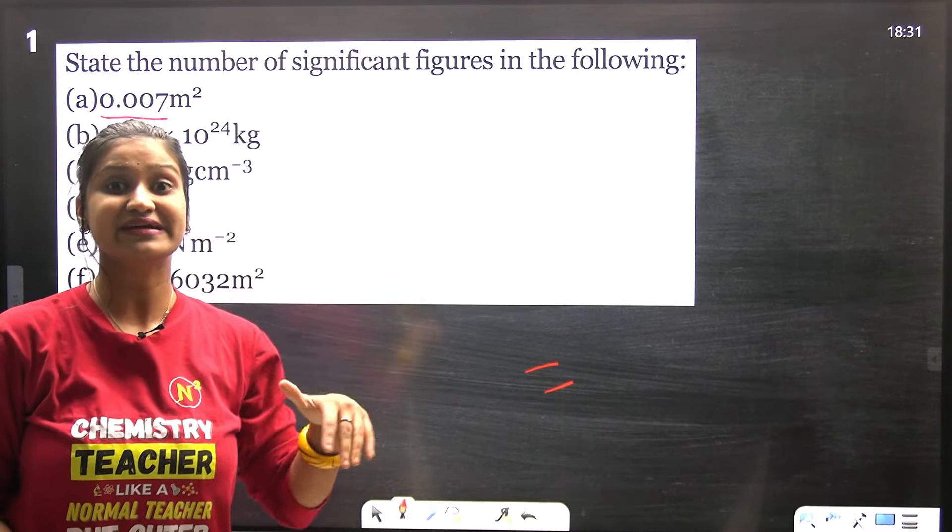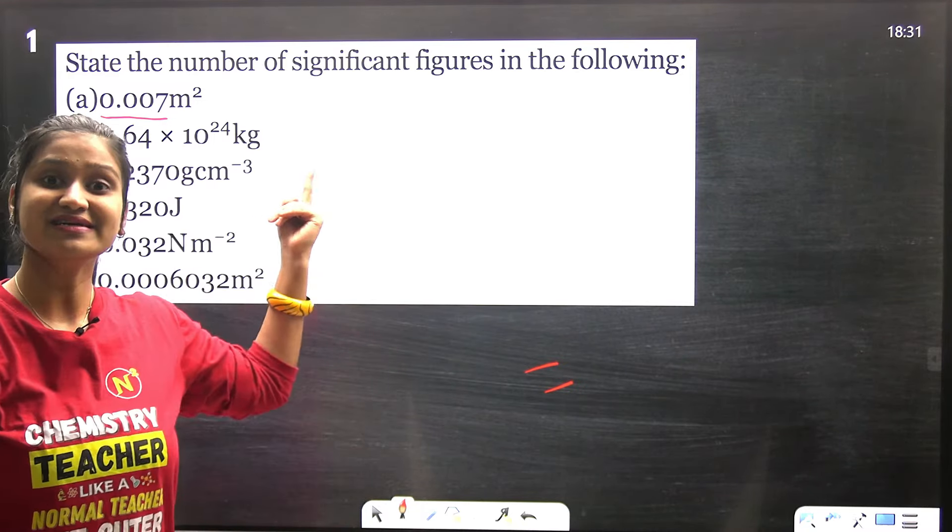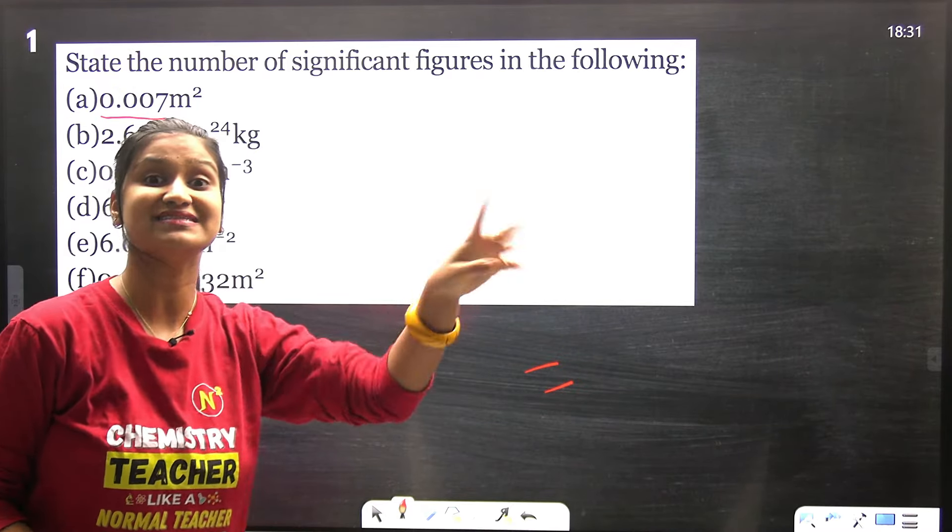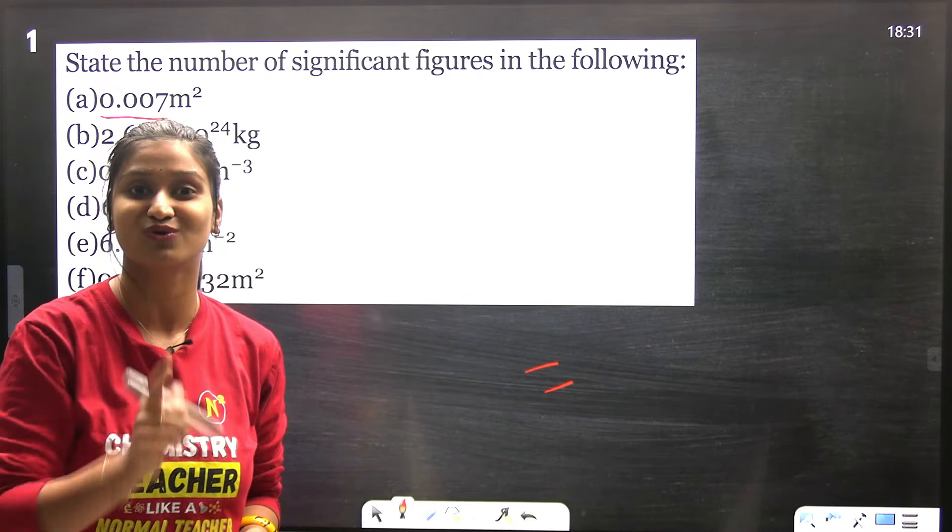They are not significant. On the other hand, if it is 0.0070, then the trailing zero makes it significant.